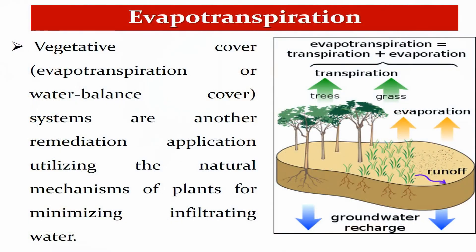The last mechanism is evapotranspiration, which combines two terms: transpiration and evaporation together. This mechanism utilizes the natural processes of plants to minimize infiltrating water. Looking at this figure, groundwater recharge and evaporation occur from grass and trees through transpiration, and evaporation from the soil combined with transpiration from trees and grass forms evapotranspiration.